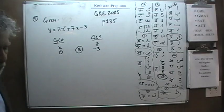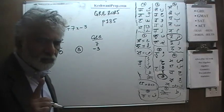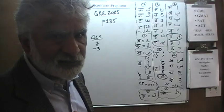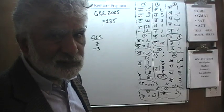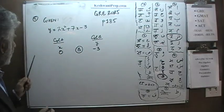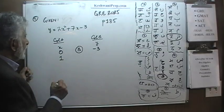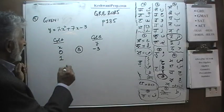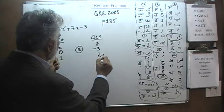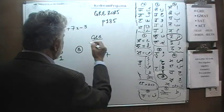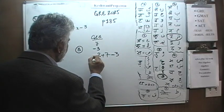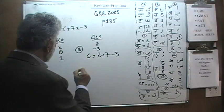Let's try one more time. We have to make sure that whatever answer we pick, what we are claiming is that that quantity is always bigger. So let's try one more time. Let's make x equal to 1. If x is 1, we end up with 2 plus 7 minus 3 — 2 plus 9, that's 6.